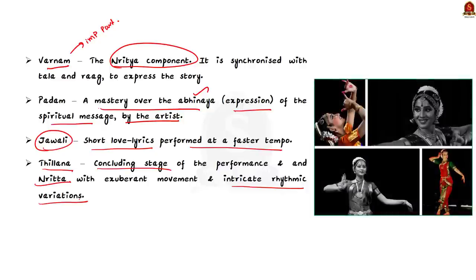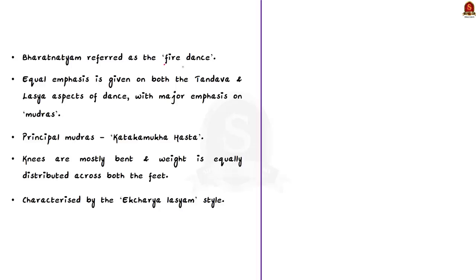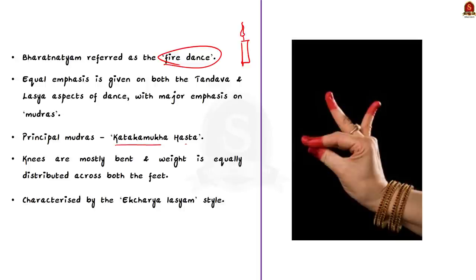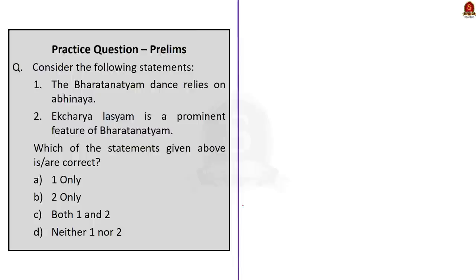These are the components of Bharatanatyam. Bharatanatyam is often termed as fire dance as it is a manifestation of fire in the human body. Most of the movements in Bharatanatyam resemble to that of a dancing flame. In this dance form, equal emphasis is given on both the Tandava and Lasya aspects of the dance with major emphasis on Mudras. One of the principal Mudras is the Katakamukha Hasta in which three fingers are joined to symbolize Om. In a Bharatanatyam recital, the knees are mostly bent and the weight is equally distributed across both the feet. It is also characterized by the Ekaharya Lasyam style. In this discussion, we covered Bharatanatyam in a prelims perspective angle. With this, let us conclude this discussion and take up the next news article.